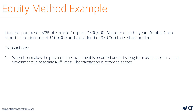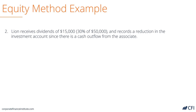When Lion initially makes the purchase, it's going to record a long-term or non-current asset called investments in associates. So it would debit $500,000 to investments in associates and credit cash for $500,000 to pay for it.